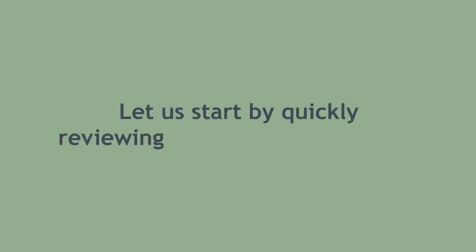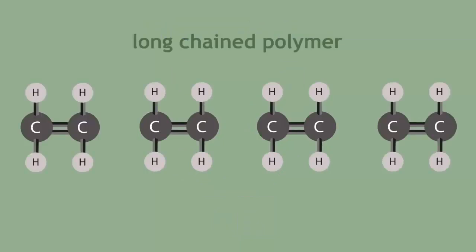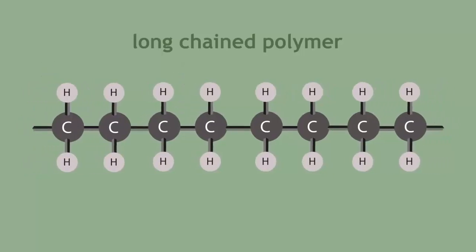Let us start by quickly reviewing the polymerisation of ethene. Here is an ethene molecule in a row and under high pressure the double bonds break and the remaining molecules attach in series to form a long chained polymer.